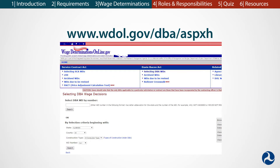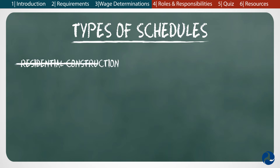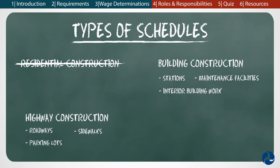That means that the laborers and mechanics are paid different rates based on the type of construction they are doing. There are four different schedules or construction types under the Davis-Bacon Act. First, there is residential construction, which isn't funded by FRA grants or loans. Next, there is building construction, which includes stations, maintenance facilities, and interior building work. Then there is highway construction, which consists of elements like roadways, sidewalks, parking lots, and paths, which are common with some rail projects.